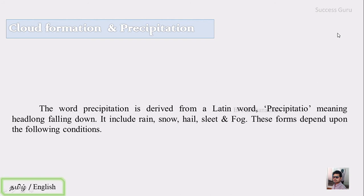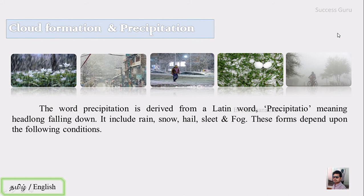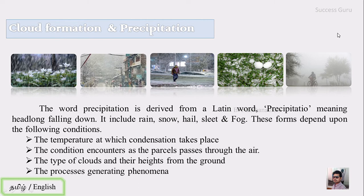Let us see about precipitation. The word precipitation is derived from the Latin word precipitatio, meaning headlong falling down. Precipitation includes rain, snow, hail, sleet, and fog. The form depends upon the following conditions: the temperature at which condensation takes place, the conditions encountered as the parcel passes through the air, the type of cloud and height from the ground, and the process generating this phenomenon. These are the four main controlling criteria which decide whether your location will get rain, snow, hail, sleet, or fog.